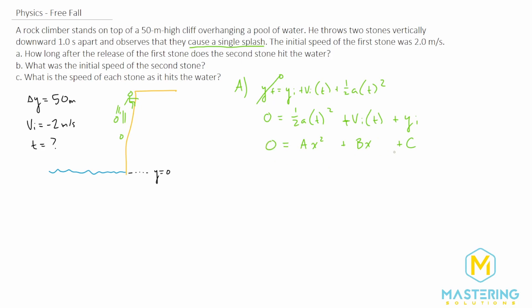We've created a quadratic equation. Plugging in values: 0 = ½ × (−9.8) × t² + (−2) × t + 50. So A = −4.9, B = −2, and C = 50.